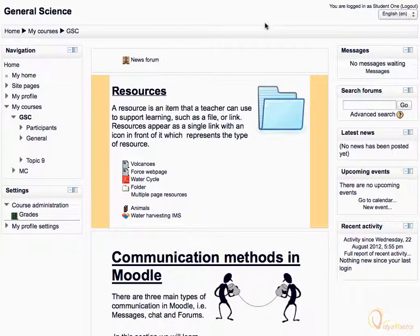First, log into Moodle and navigate to the course home page. The book resource is represented by the icon as highlighted. Let's click on the book name to display it.